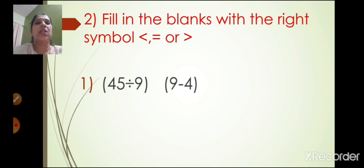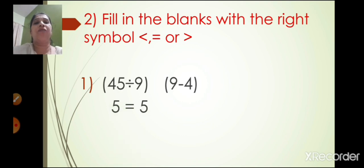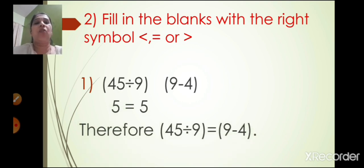The second question is: fill in the blanks with the right symbol — smaller than, equal to, or greater than. The first one: 45 divided by 9 and 9 minus 4. When you divide 45 by 9, the answer is 5 (nine fives are 45). And 9 minus 4 is also 5. So 5 is equal to 5. Therefore 45 divided by 9 is equal to 9 minus 4.